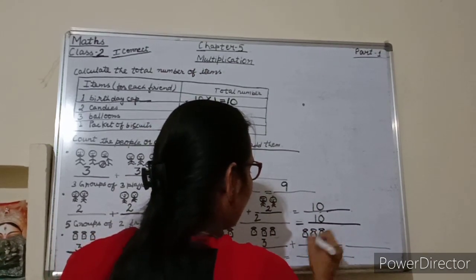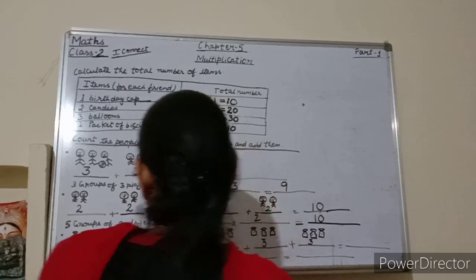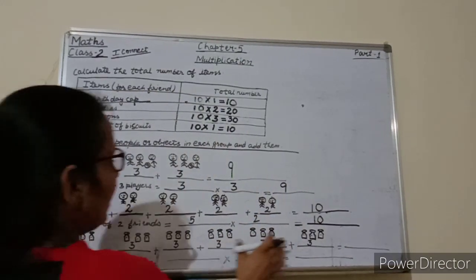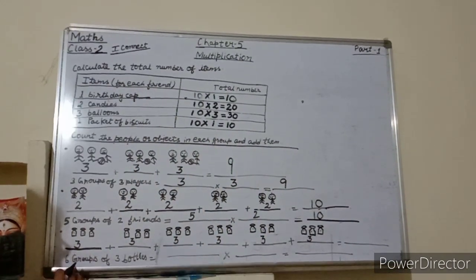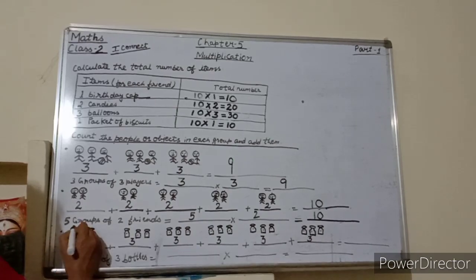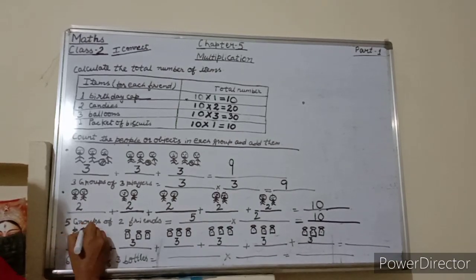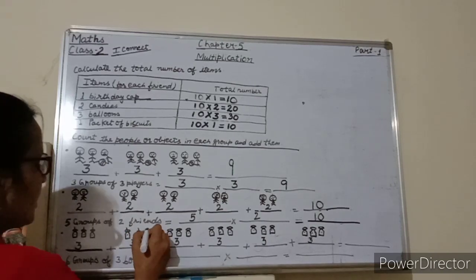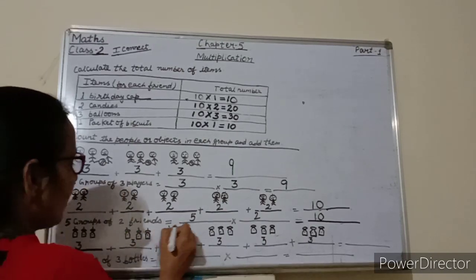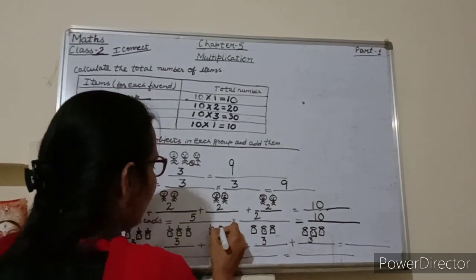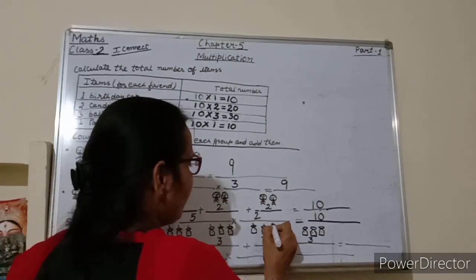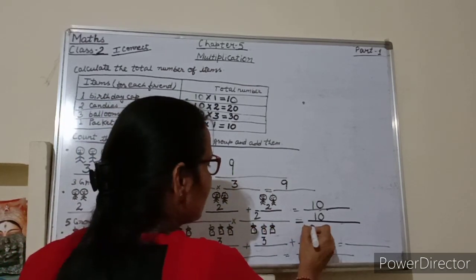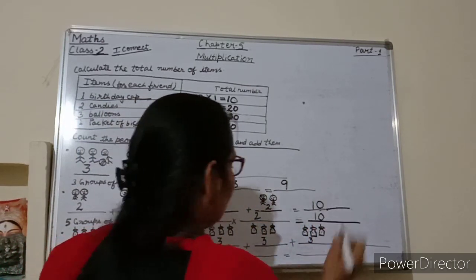Now count how many bottles are there in total: 1, 2, 3, 4, 5, 6, 7, 8, 9, 10, 11, 12, 13, 14, 15, 16, 17, 18.